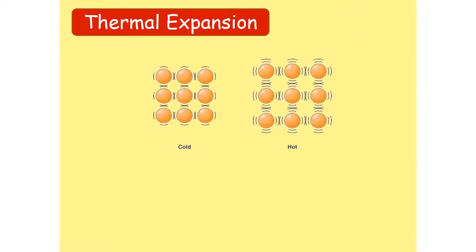When solids, liquids and gases are heated, their molecules gain thermal energy. The molecules move faster and take up more space, meaning the separation between molecules increases — the molecules move away from each other. The opposite is also true when temperature falls: molecules get closer and the separation between molecules decreases.